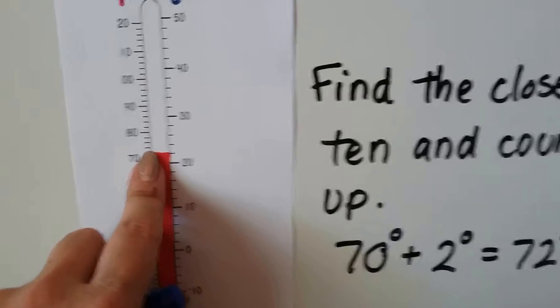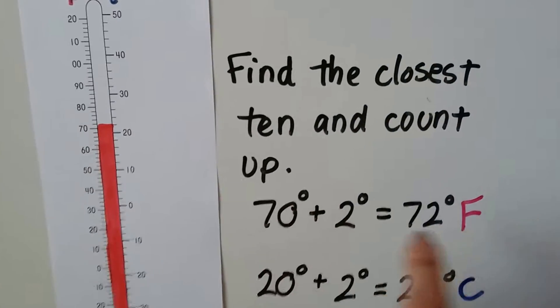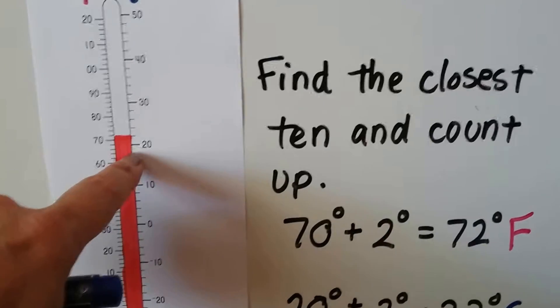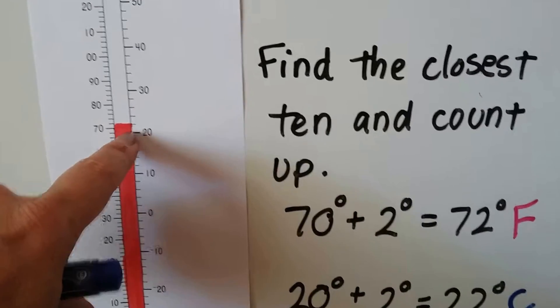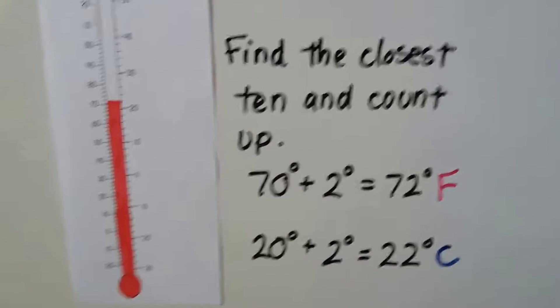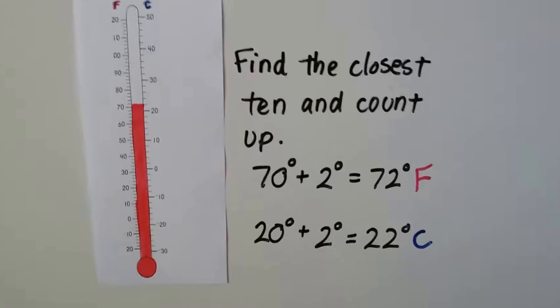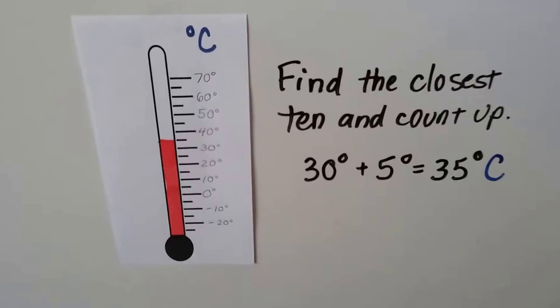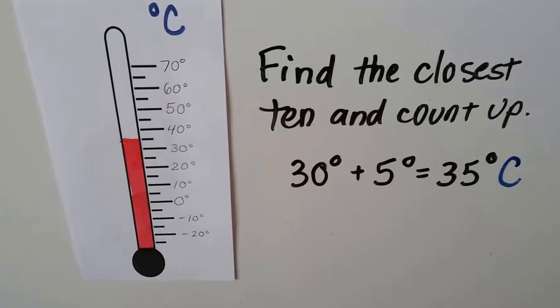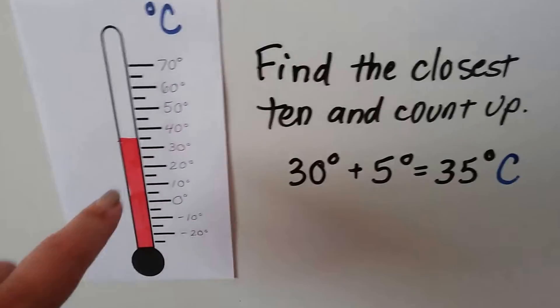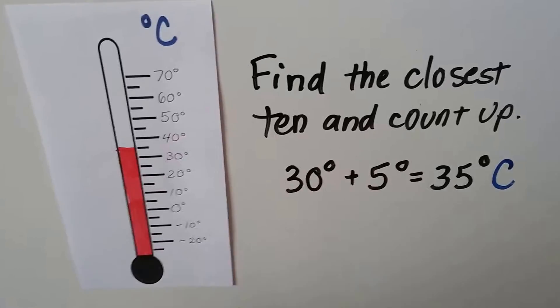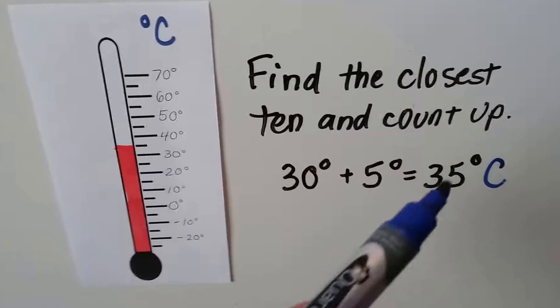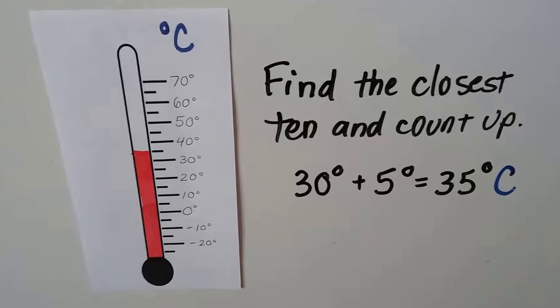On the Fahrenheit side, on this side, it just passed the 70, and this is going by 2, so this would be 72 degrees Fahrenheit. See? For Celsius, it just passed the 20, and we add 2, so it's 22 degrees Celsius. Here's a Celsius thermometer. We find the closest 10 that it just passed and we count up. It just passed 30. This one's in increments of 5, so we're going to add the 5, and we have 35 degrees Celsius.